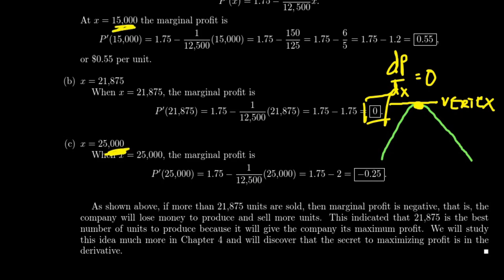This is the Goldilocks number — not too hot, not too cold, just right. As we study more derivative applications in Chapter 4, we'll talk much more about this optimization problem, using derivatives as a critical tool to decide the right production level. Whatever commodity is being sold, the magic number — based on cost and demand — is 21,875, and that's the answer we derive from calculus.